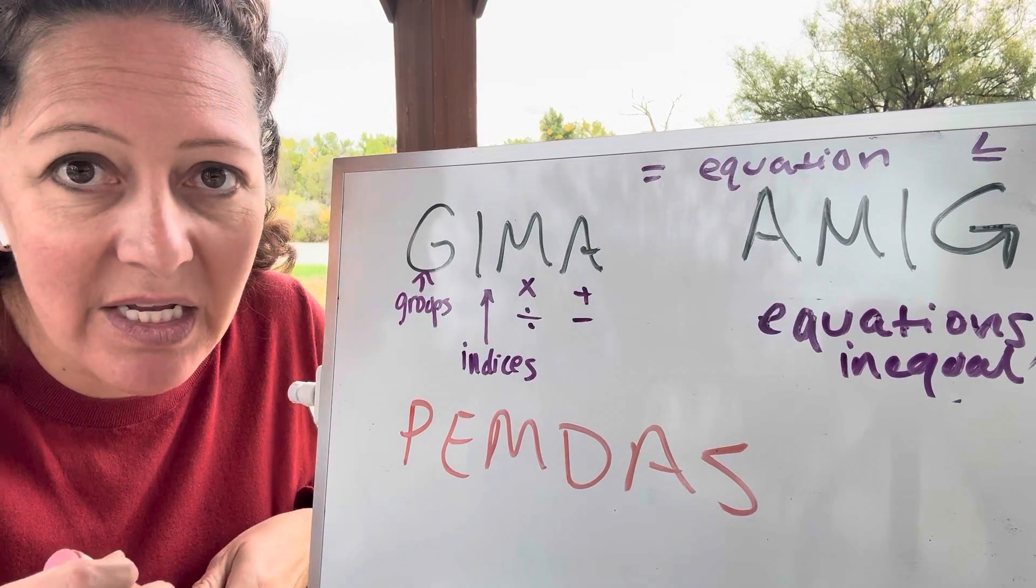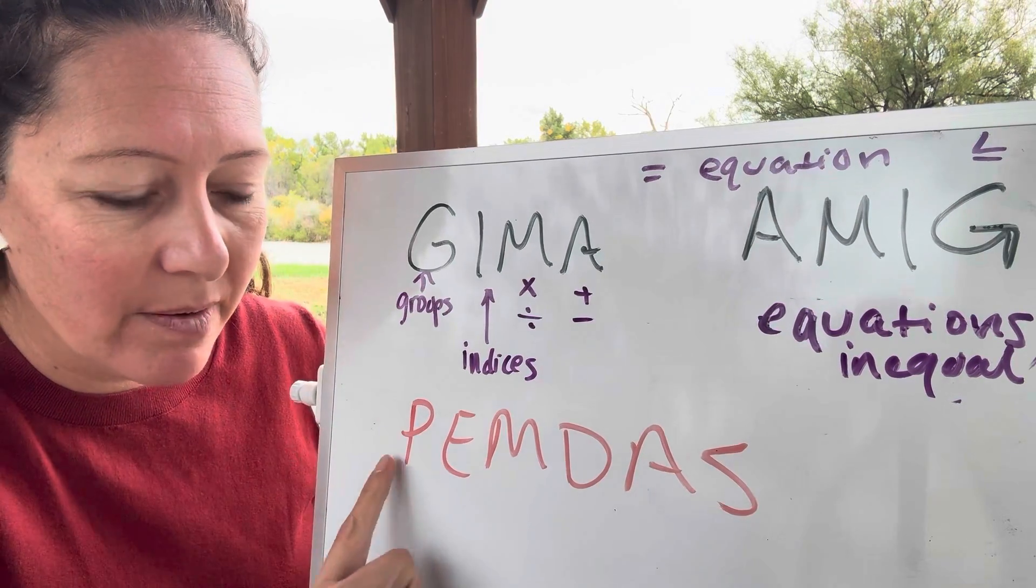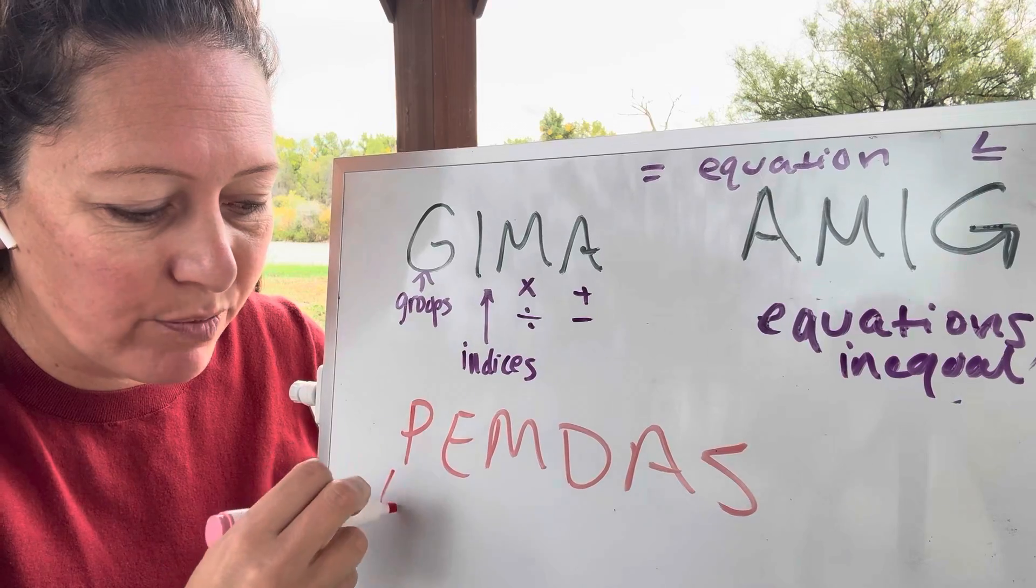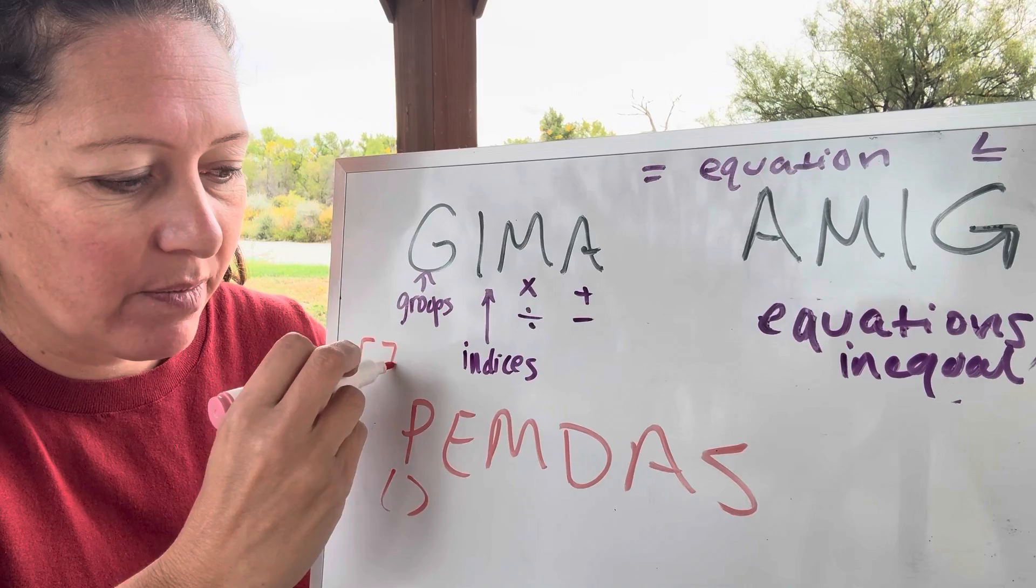We've also, if they've been in Essentials, we talk about PEMDAS at some point in the math. But the P, standing just for parentheses, that's not fully inclusive. Because we could have brackets.